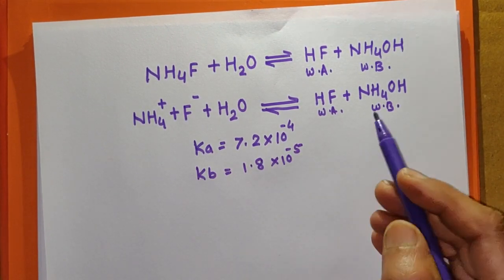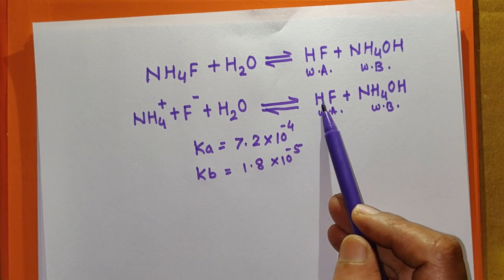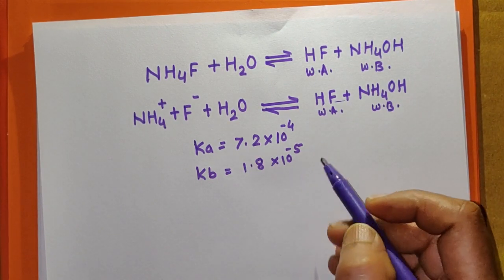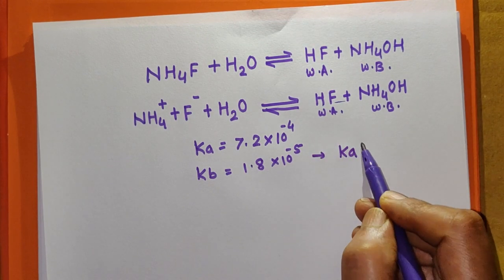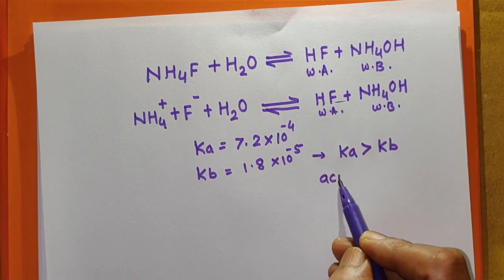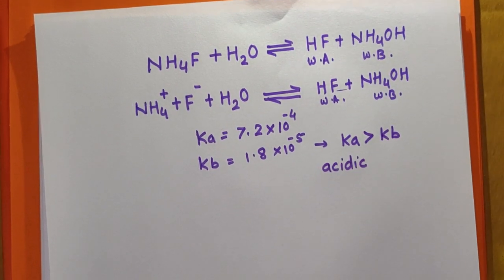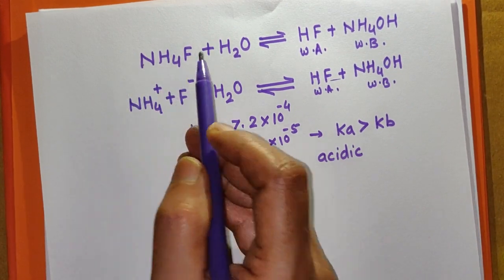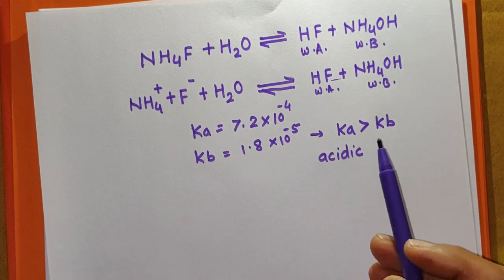Comparing these values, both are weak, but HF is stronger than NH₄OH. That is, Ka > Kb for this salt. Therefore, the solution will be acidic in nature. For the salt NH₄F, since Ka is greater than Kb, the solution is acidic.